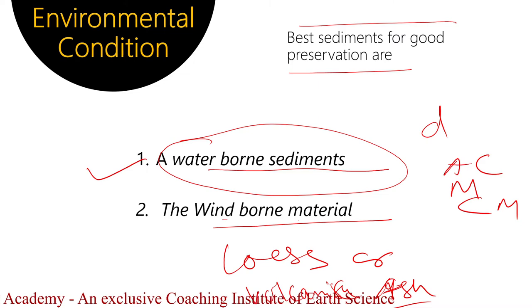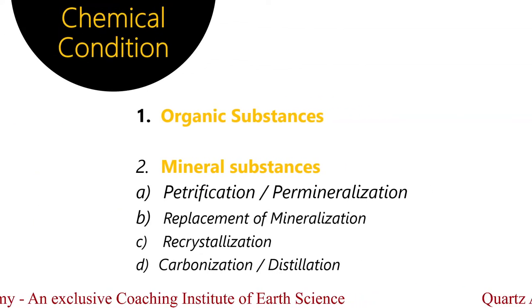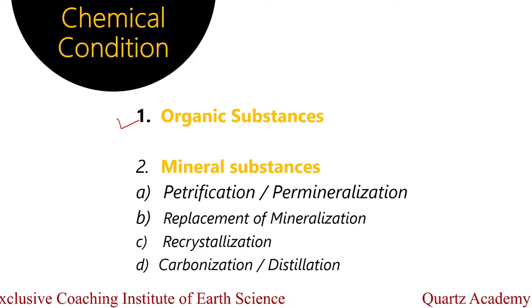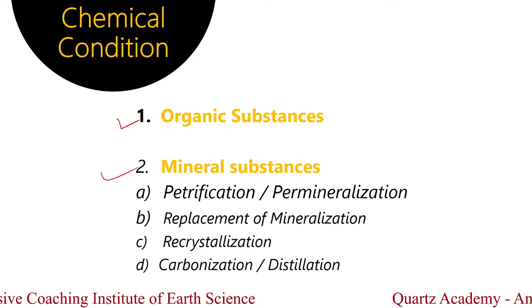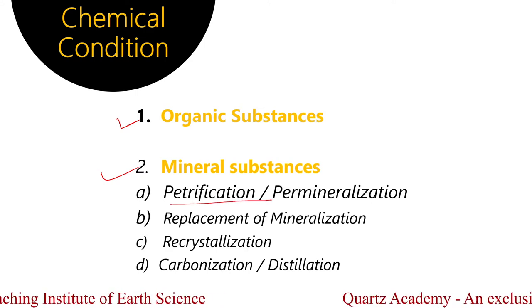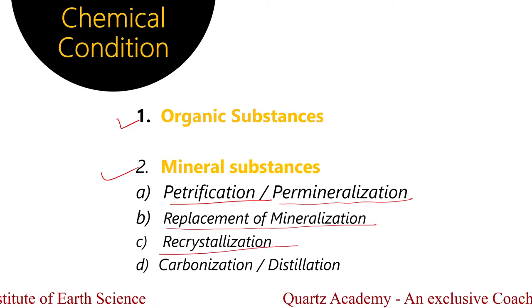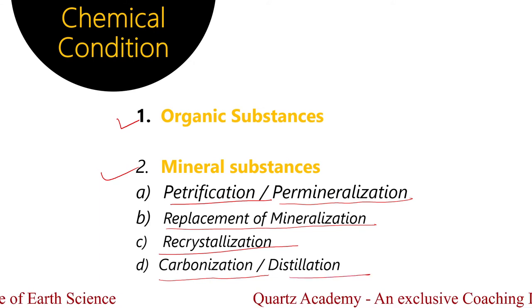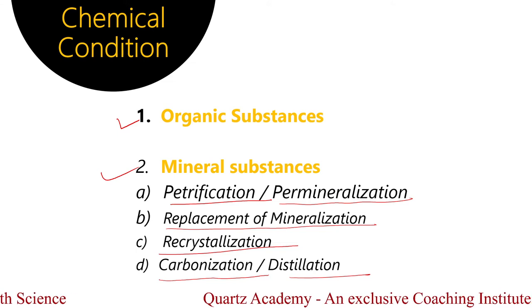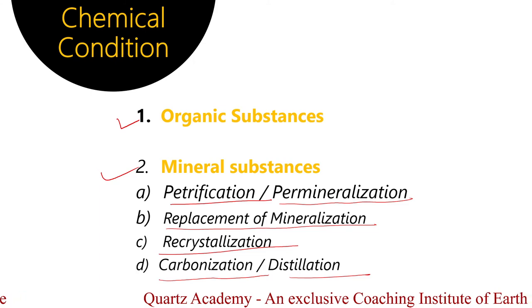Now, what are the chemical conditions for fossilization? We have two major chemical conditions: organic substances and mineral substances. In mineral substances, we have petrification, permineralization, replacement of mineralization, recrystallization, carbonization, and distillation. Petrification, replacement of mineralization, recrystallization, and carbonization are the most important chemical conditions.